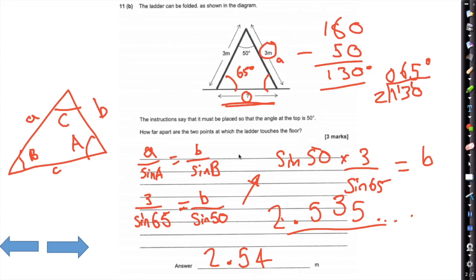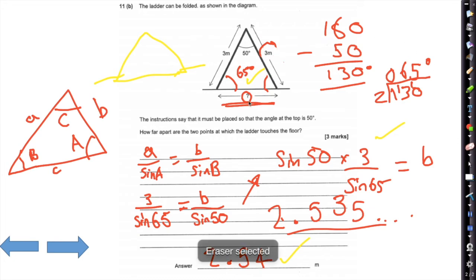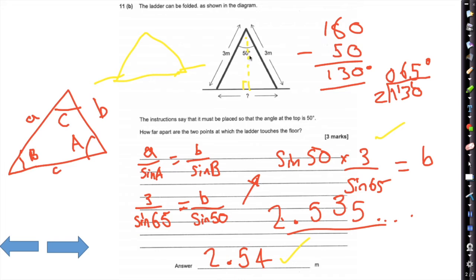The marks: finding out 65 degrees is one mark, correct use of the sine rule is the second mark, and the answer 2.54 m is the third mark. Another way is to split this triangle down the middle — that angle would be 25 degrees — and use trigonometry to find half the distance then double it.